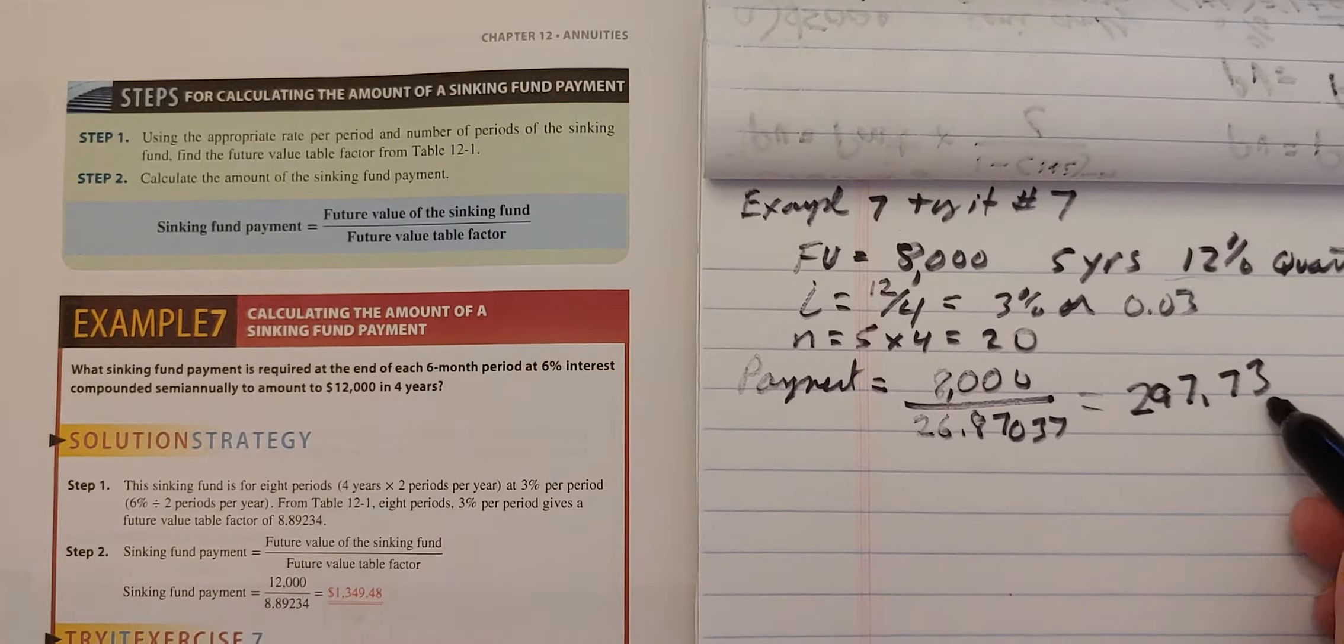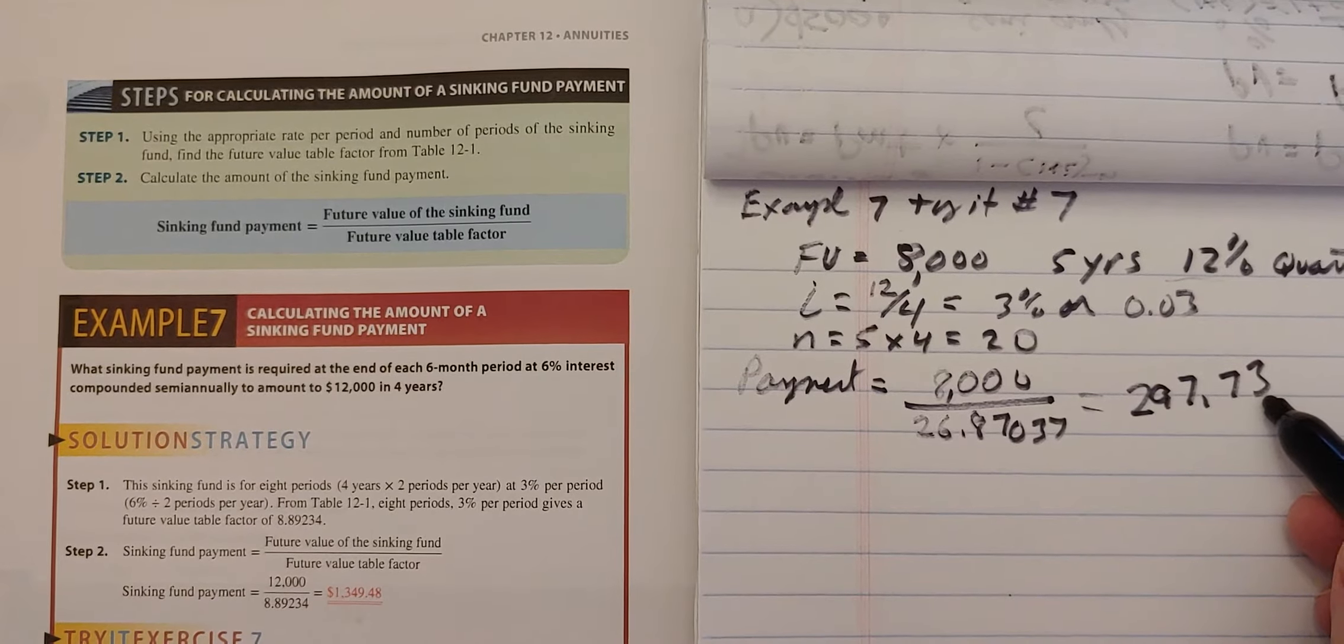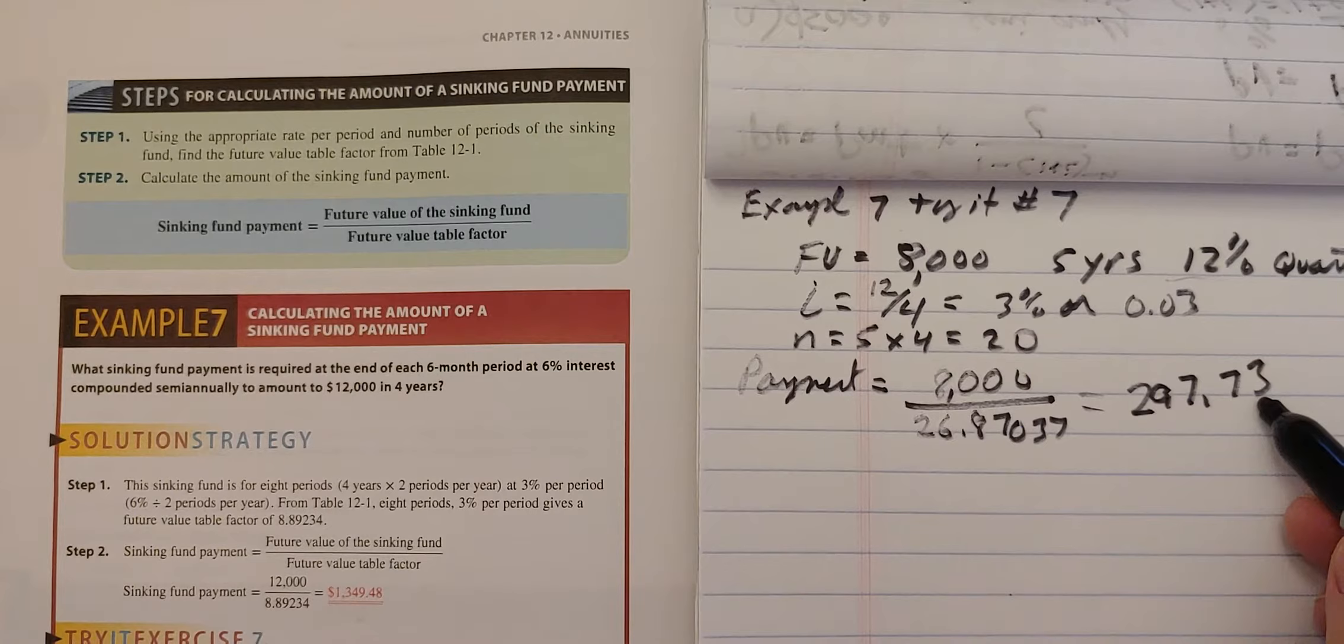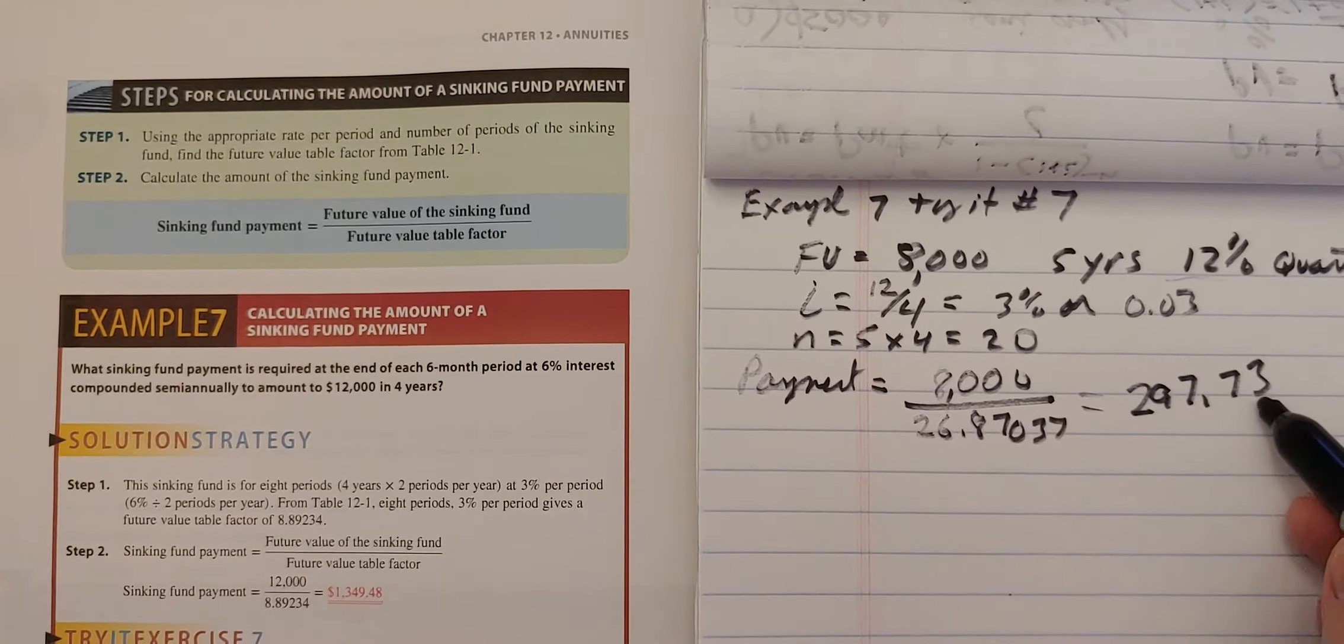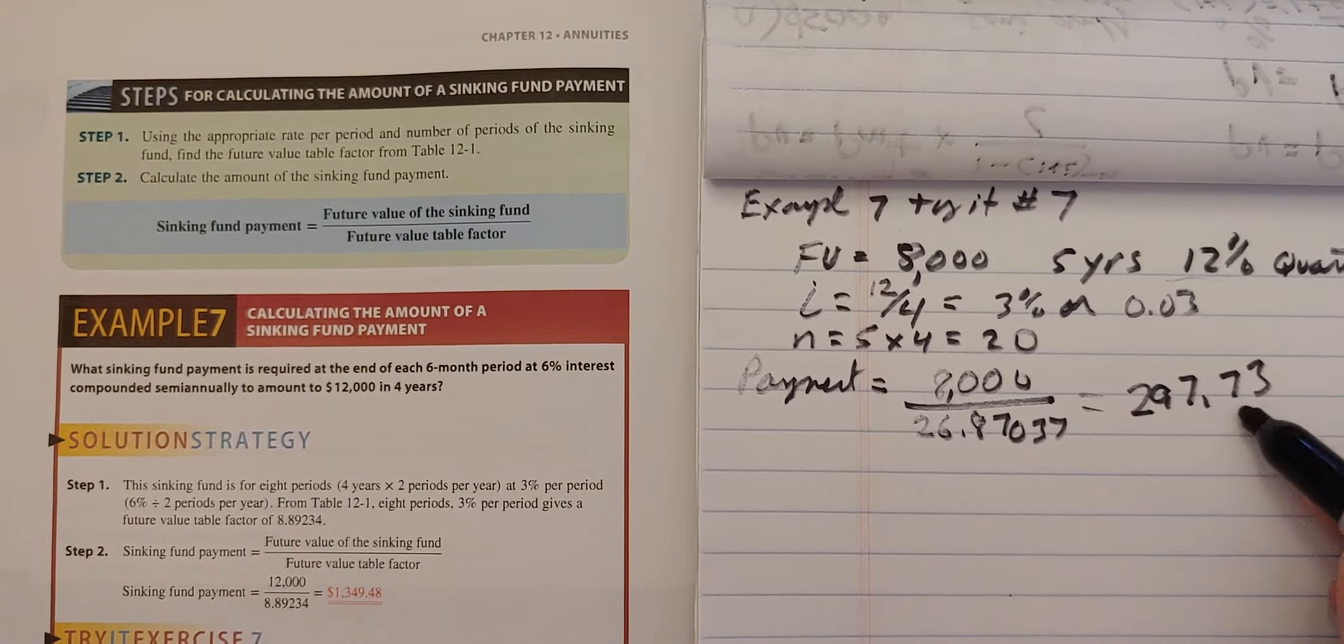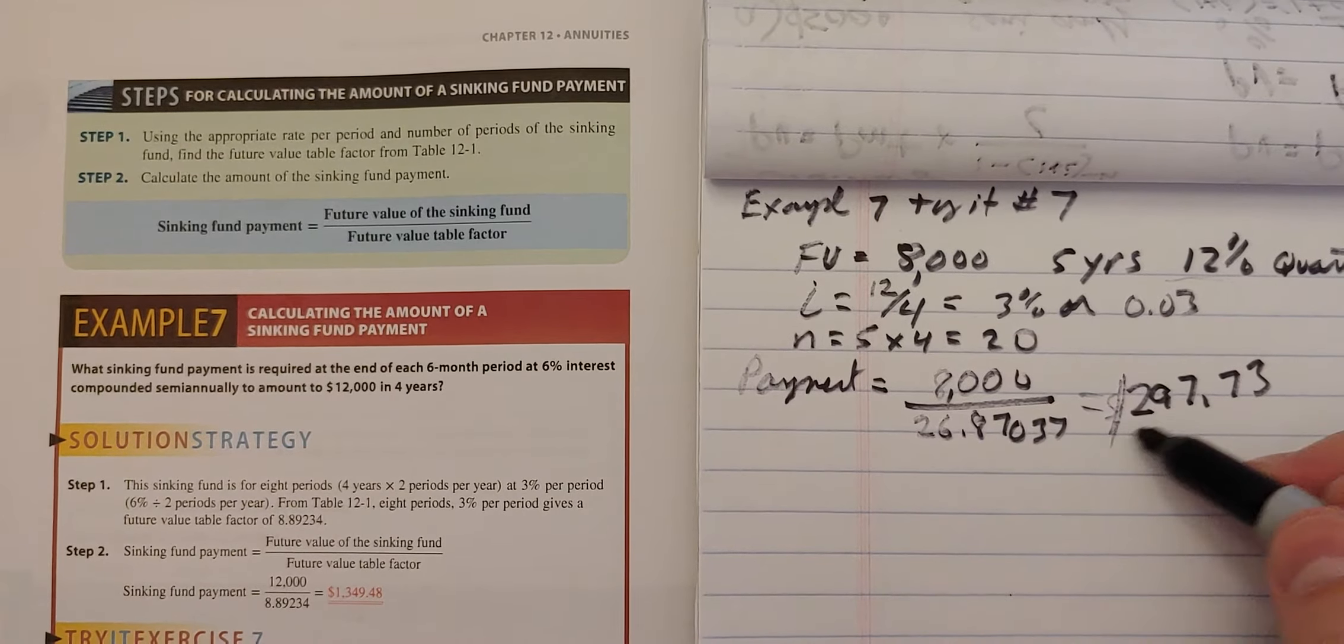The factor after the 10s place, 1s, 10s. The factor after the 10s place was a 5. So this was a 2 that rounds up to 3. So $297.73 is my payments.